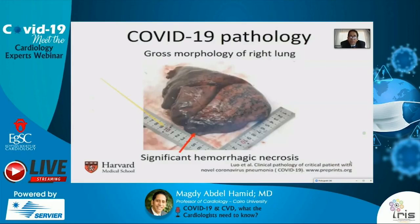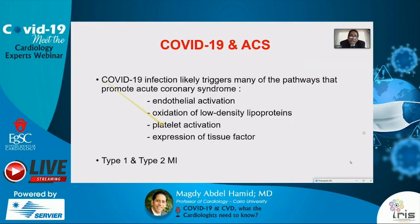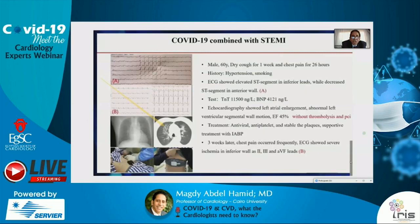Patients with COVID-19 can develop acute coronary syndrome because COVID-19 can trigger many pathways that increase susceptibility to ACS: endothelial activation, oxidation of LDL, increased platelet activation, and expression of tissue factor. Myocardial infarction may be type 1 due to ruptured plaque or type 2 due to oxygen supply-demand imbalance from hypoxia. A case example shows a STEMI patient with ST elevation in inferior leads, elevated troponin, ejection fraction decreased to 45%, treated for both acute coronary syndrome and COVID-19.